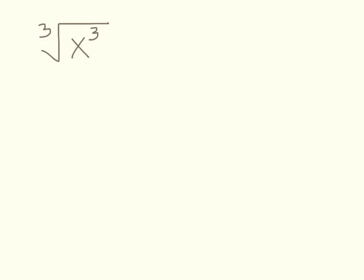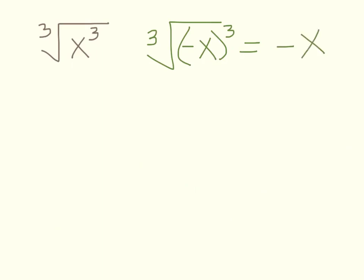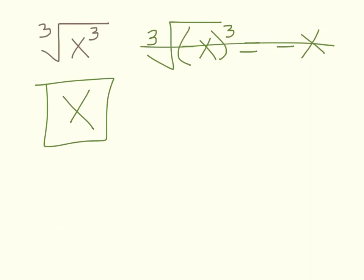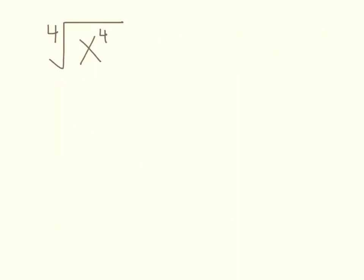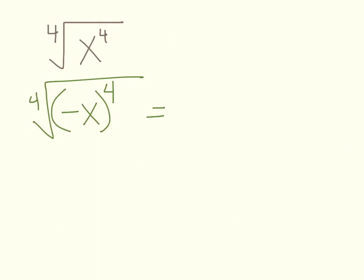Don't assume the cube root of x cubed is also the absolute value of x — it's not. With an odd root, the cube root of negative x gives negative x, and the cube root of positive x cubed gives positive x, so it just equals x. But the fourth root of x to the fourth is an even root, so like the square root case, that one is the absolute value of x. Any time it's an even root, the answer requires absolute value.